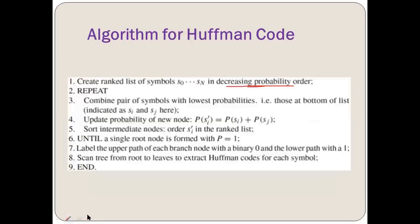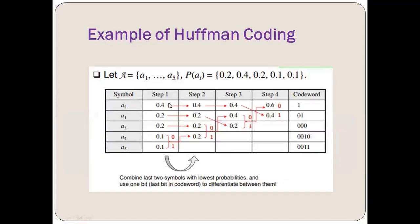We put the symbols in decreasing probability order. 0.4 is the highest, then 0.2. Whenever two symbols have the same frequency, we follow sequence order — so A1 comes before A3 since both are 0.2. Similarly, A4 comes before A5 since both are 0.1. This completes the first step: sorting in decreasing order.